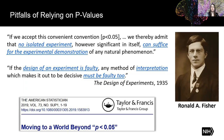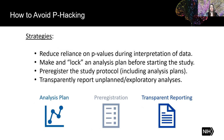In response to recent abuses of the p-value, the American Statistical Association published editorials advising that scientists move to a world beyond p less than 0.05, suggesting we be very clear about limitations in our designs and accept levels of uncertainty. Some ways to avoid p-hacking: reduce reliance on p-values during interpretation, make and lock an analysis plan before starting the study, go further and pre-register the entire study protocol including analysis plans, and most of all, be transparent about reporting unplanned or exploratory analyses and labeling them as such.